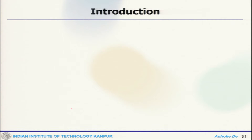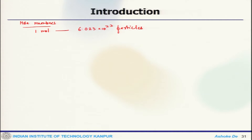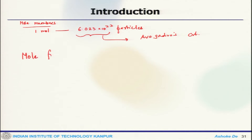One of the important things one has to know is the mole number. One mole corresponds to a number which is 6.023 × 10²³ particles. This could be atoms, molecules, or any chemical species. This particular number is known as Avogadro's constant. One can define the important quantity: the mole fraction, denoted as X_i, where i stands for that particular species.